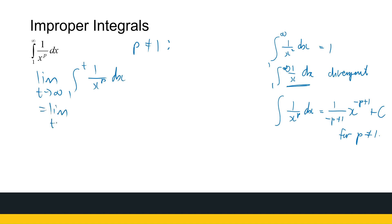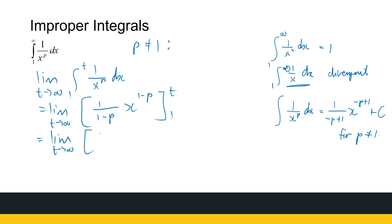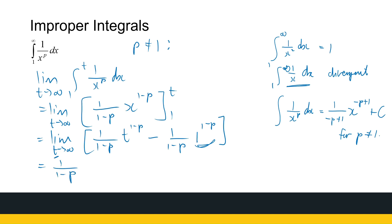Since p is not equal to 1, we use the antiderivative I've got here. I'm going to write minus p plus 1 as 1 minus p — it's just easier to read. So that gives the limit as t approaches infinity of 1 over (1 minus p) times x to the power (1 minus p), evaluated between t and 1. That simplifies to 1 over (1 minus p) times the limit as t approaches infinity of t to the power (1 minus p) minus 1, since 1 to any power is 1.